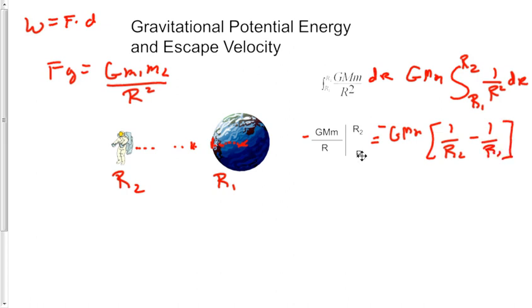Because we'll plug in r2 for r, and then subtract r1 for r. And I like to factor my negative 1 into this. So I'm going to end up with G, big M, little m, multiplied by 1 over r1 minus 1 over r2.